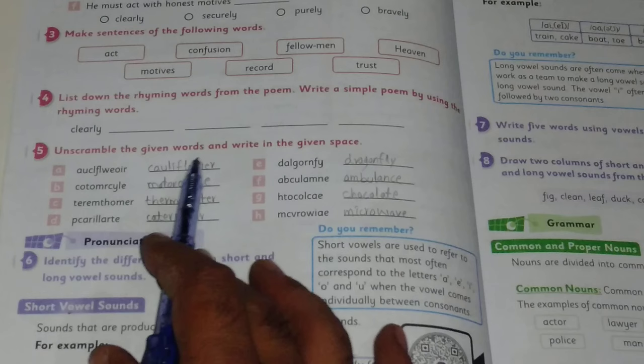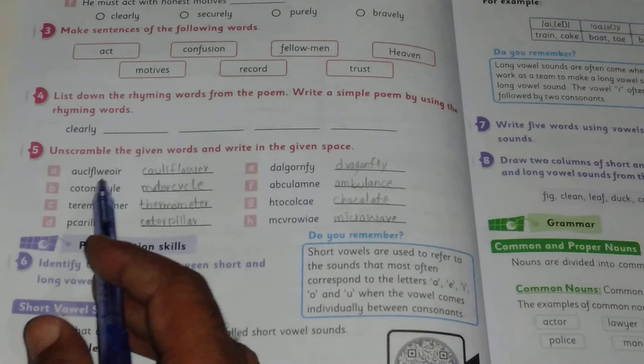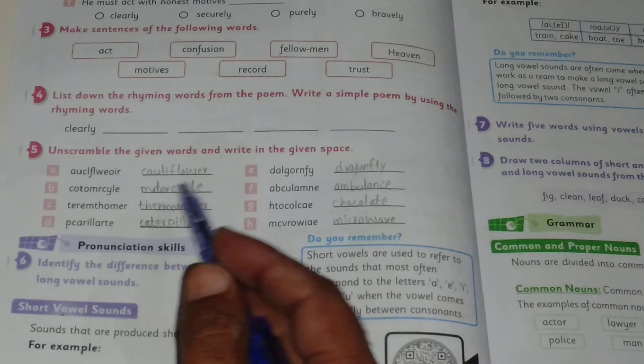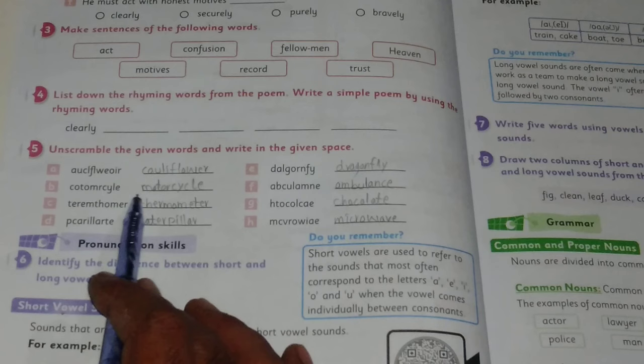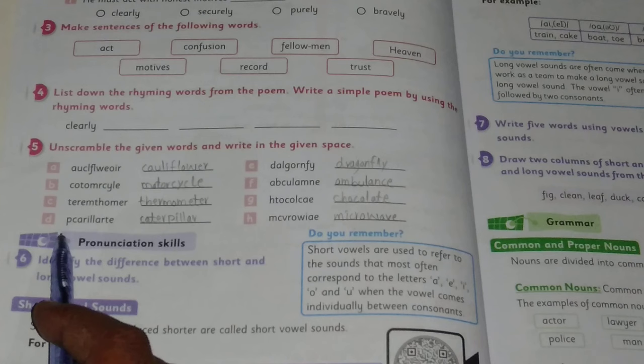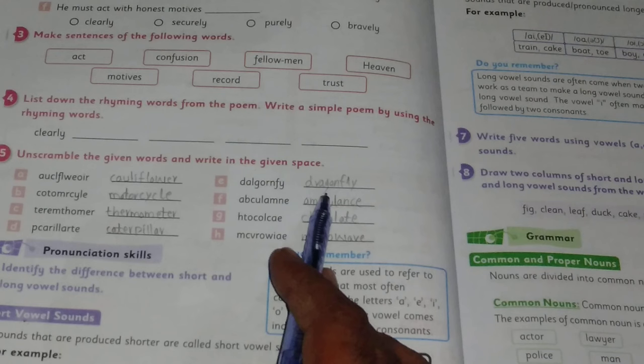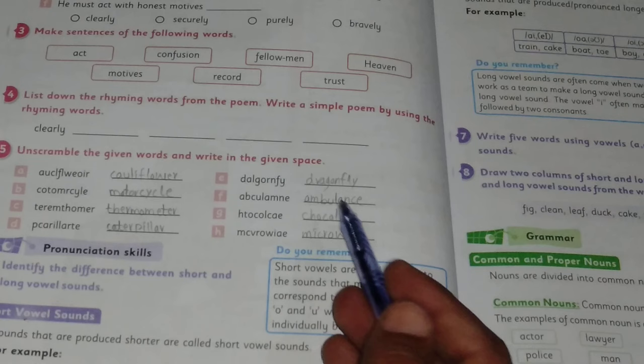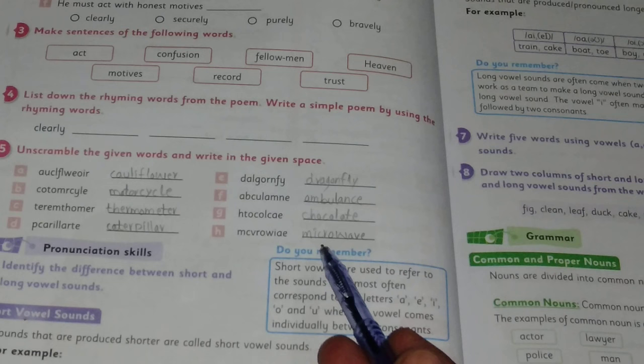Question number 5: Unscramble the given words and write in the given space. The correct words are: cauliflower, motorcycle (M-O-T-O-R-C-Y-C-L-E), thermometer, caterpillar, dragonfly, ambulance, chocolate, and the last one is microwave.